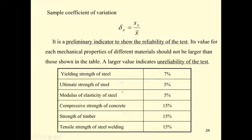Most standard specifications provide the acceptable value of the coefficient of variation. For example, the yielding strength of steel is 7% — you cannot go beyond this, otherwise your value is unreliable. The tensile strength of steel is about 5%. However, for concrete or timber the value gets larger, since concrete has lower quality control compared to steel and timber is a natural material — so concrete and timber have larger coefficients of variation.